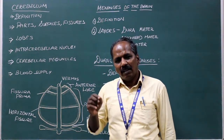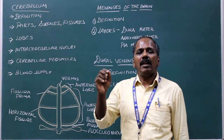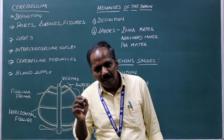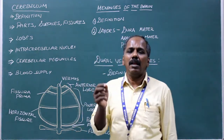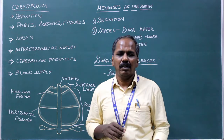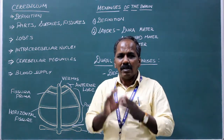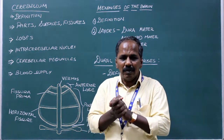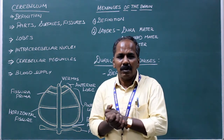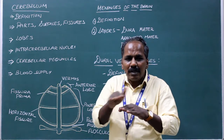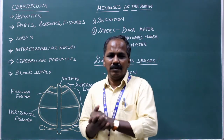Cerebellum definition. It is the second largest part of the brain, situated in the posterior cranial fossa. It is separate from the cerebrum by a fold of dura mater known as Tentorium cerebelli.